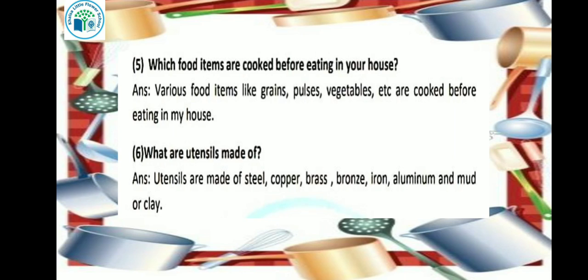Next: which food items are cooked before eating in your house? Various food items like grains, pulses, vegetables, etc. are cooked before eating in my house — because there are many vegetables, pulses and grains that we cannot eat raw, so those food items are cooked in our homes.